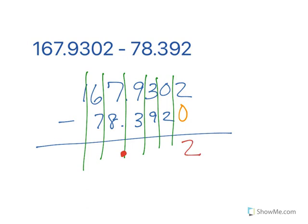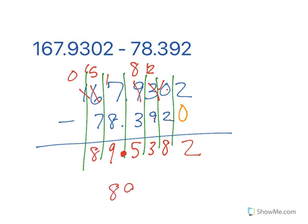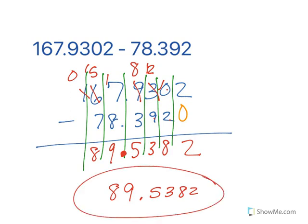So let's go ahead and subtract. 2 minus 0 is 2. 0 minus 2 does not work, so I borrow. 10 minus 2 is 8. 2 minus 9 doesn't work, so I borrow. 12 minus 9 is 3. 8 minus 3 is 5. 7 minus 8 doesn't work, so I borrow. 17 minus 8 is 9. 5 minus 7 doesn't work, so I borrow. And 15 minus 7 is 8. So final answer, 89 and 5,382 ten thousandths.